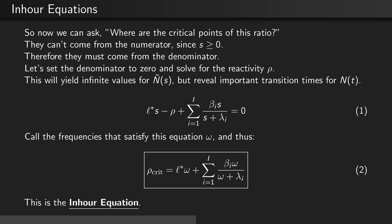Call the frequencies that satisfy this equation ω. Therefore, the critical reactivity is equal to the mean neutron generation time times the critical frequency plus the sum over all delayed neutron groups of βᵢω divided by (ω + λᵢ). This is called the Inhour equation.